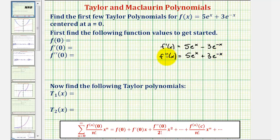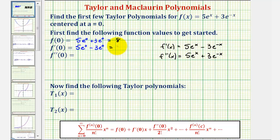Notice how the second derivative is the same as the original function. So f of zero would be five e to the zero plus three e to the zero, which would be five plus three or eight. f prime of zero would be five e to the zero minus three e to the zero, which would be five minus three or two. And f double prime of zero is the same as f of zero, giving us eight.